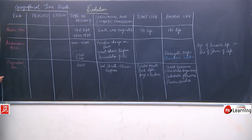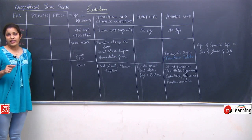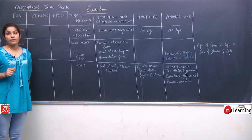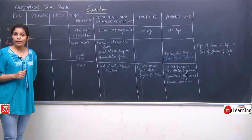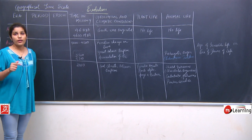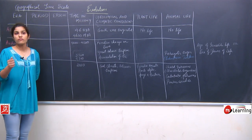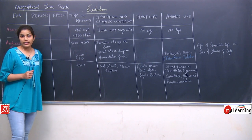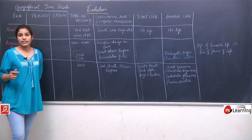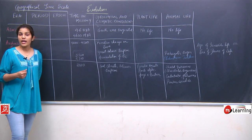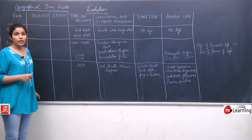The third era, the Proterozoic era, was around 2000 million years ago. The climatic conditions were quite cool compared to the previous era. The first plant life originated — aquatic algae, fungi, and bacteria. In animal life, shelled protozoans, primitive annelids, some coelenterates, and some flatworms originated around 2000 million years ago in the Proterozoic era.